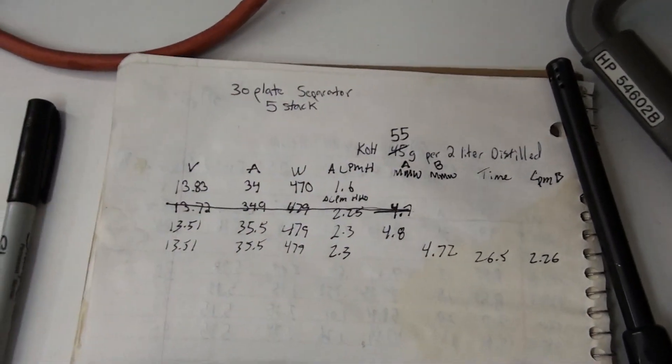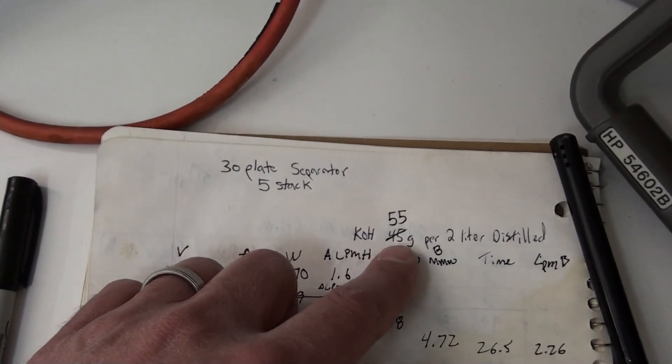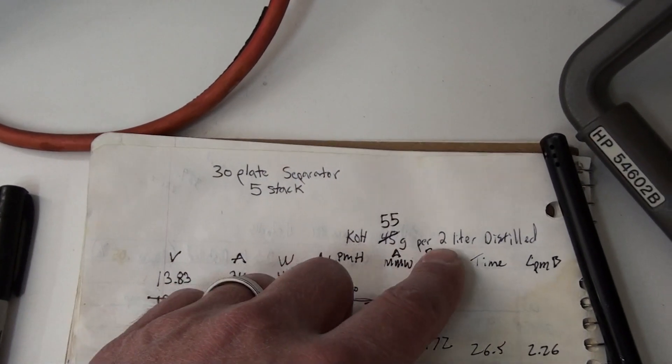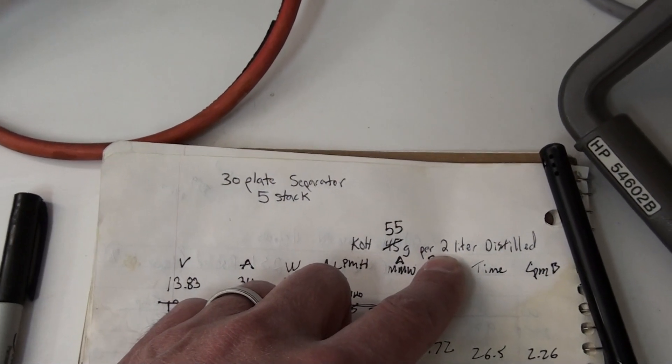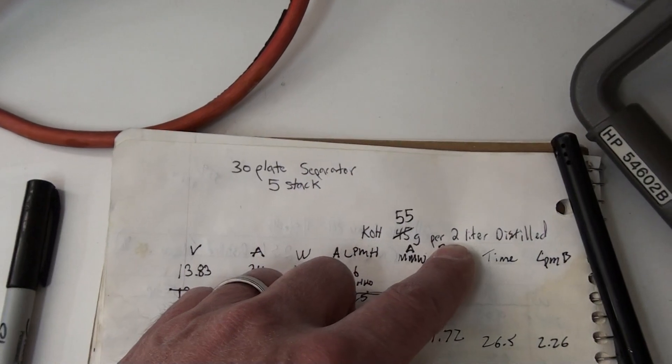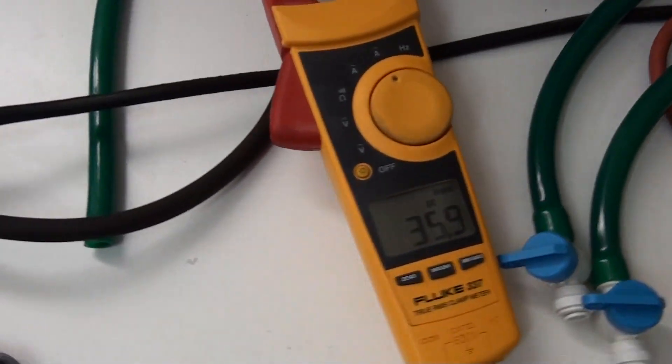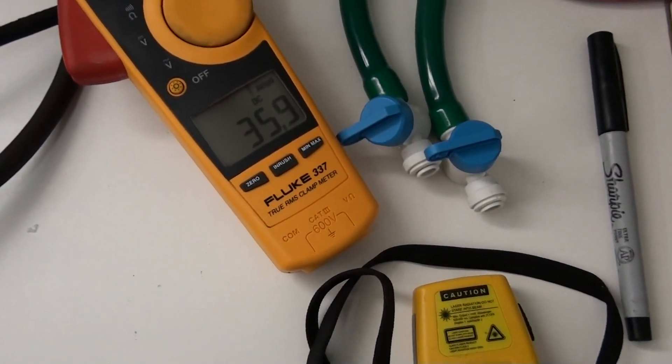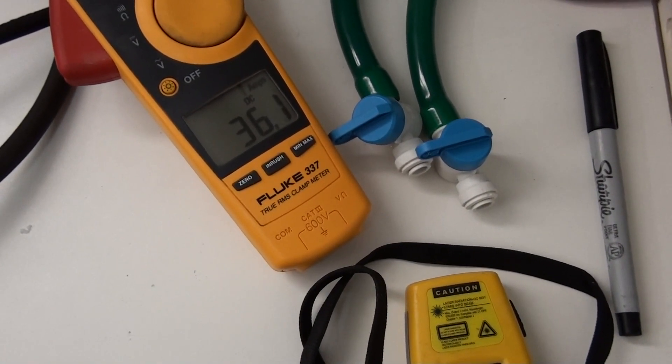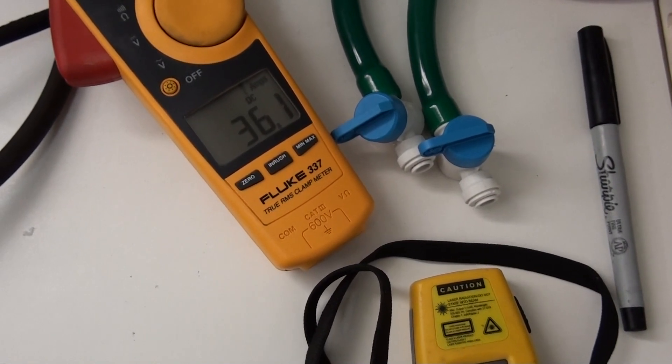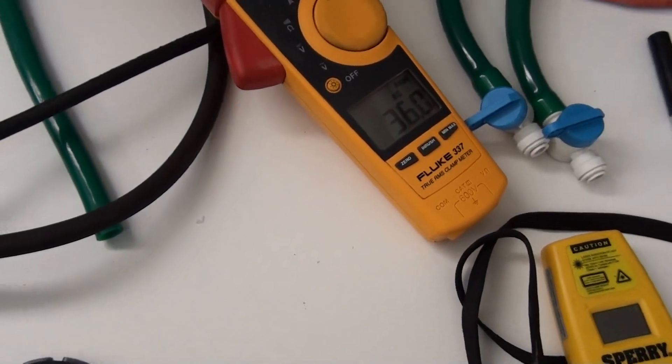So that's what we've got right now, the KOH, I put 55 grams for 2 liters of distilled water, there's 4 liters of distilled water in the system, so I've got 110 grams of KOH. The maximum I can draw right now is 36 amps with the amount of KOH we've got in there.